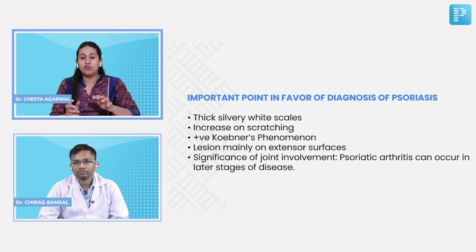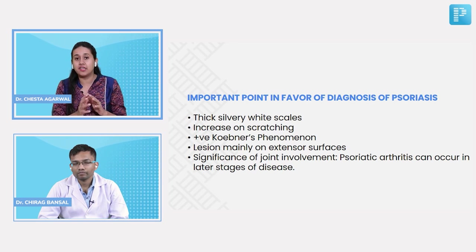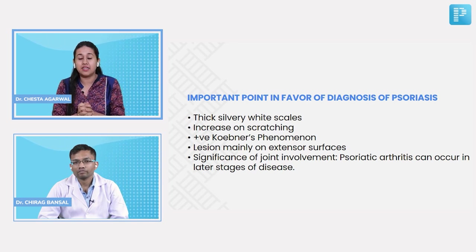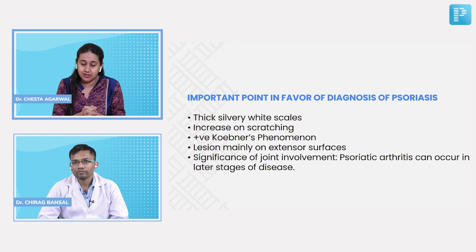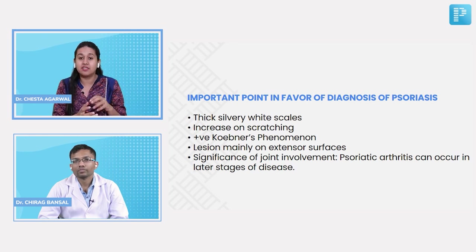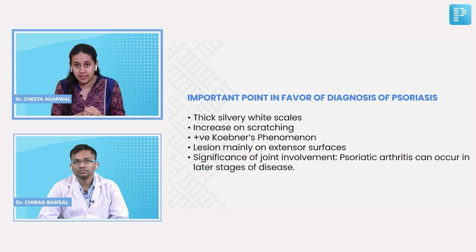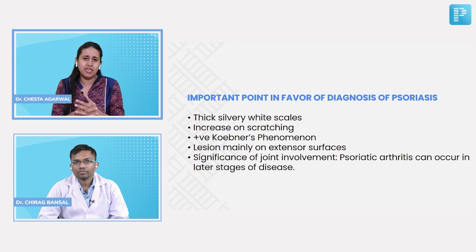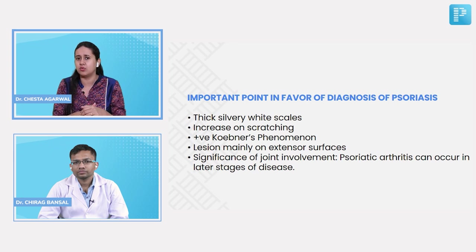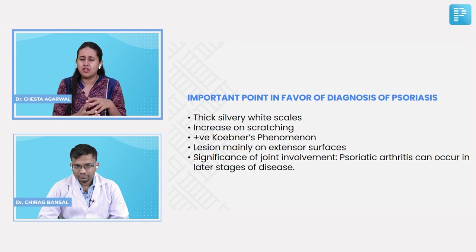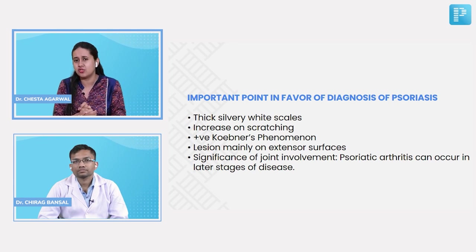One important note: involvement of the extensors with lesions that are red in color and have thick white or silver scales points toward psoriasis. Now, can you tell me why you asked about joint pain in this patient — any particular significance?